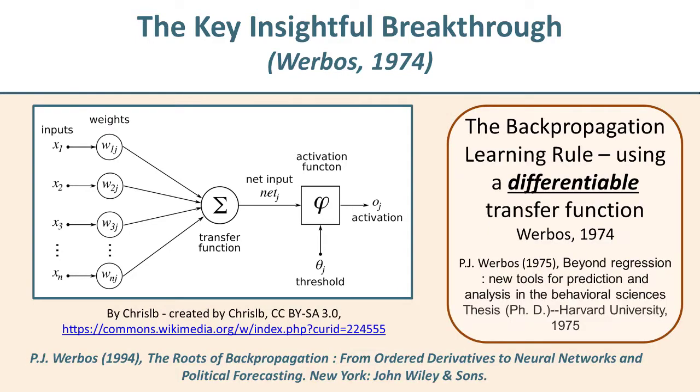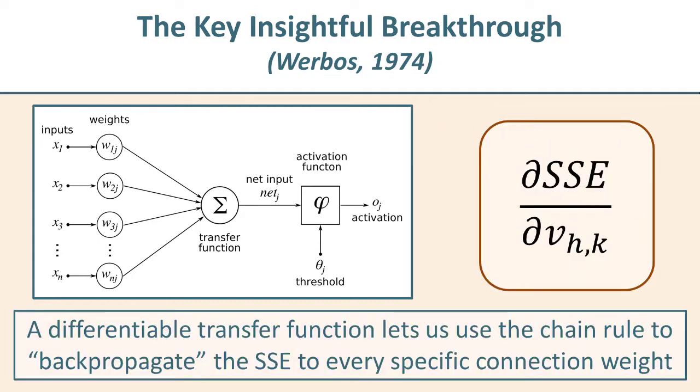This is the insight that Paul Werbos made and applied to neural networks in his Harvard PhD dissertation in 1974. Once we understand that we need a differentiable transfer function as opposed to a simple bi-state one, then it's implicit in that understanding that we're going to use the chain rule to carry out the differentiation involved in finding how the sum squared error depends on each connection weight.